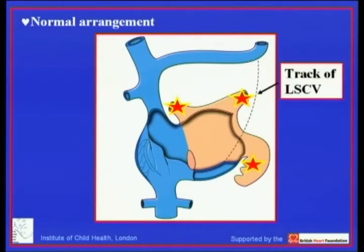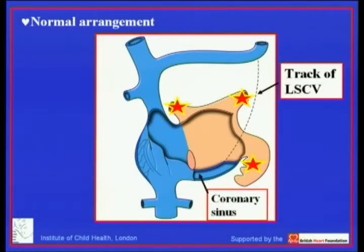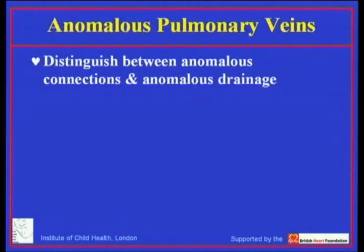Note the course of the persistent left superior caval vein, if present, running between the left-sided pulmonary veins and the left atrial appendage. Note also the location of the coronary sinus — although opening into the right atrium, the coronary sinus is a component of the morphologically atrio-ventricular junction.